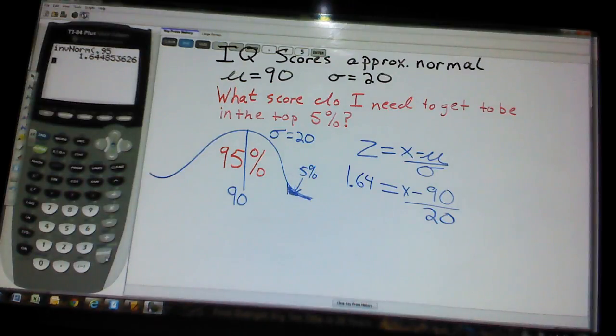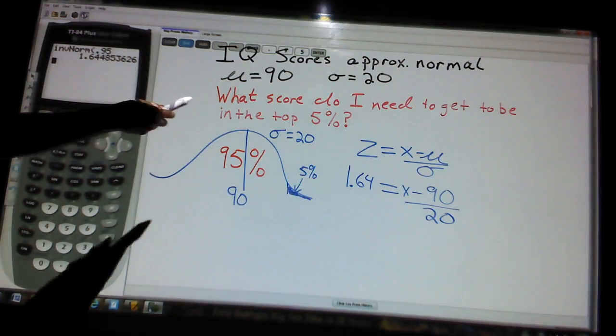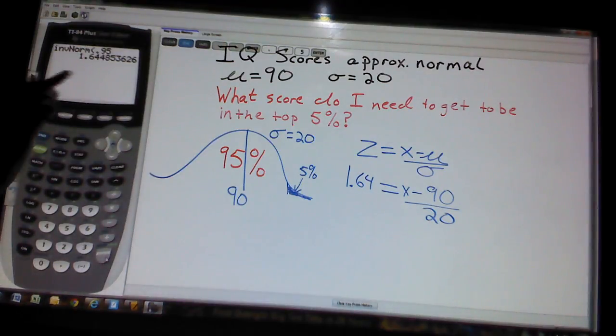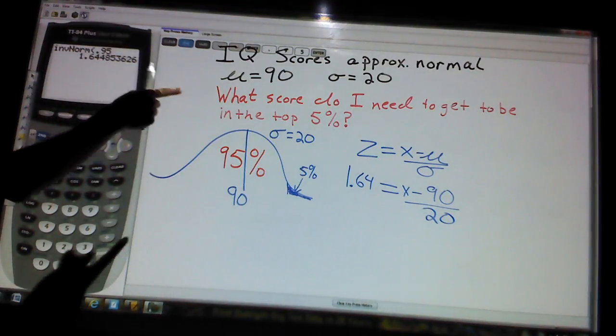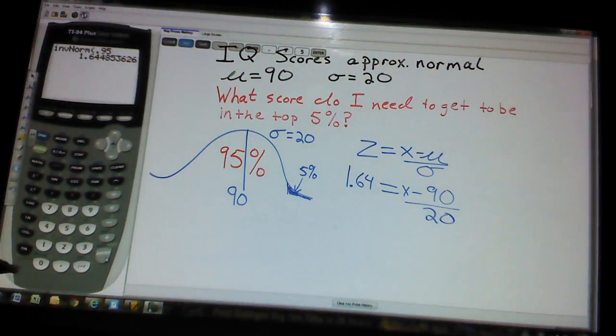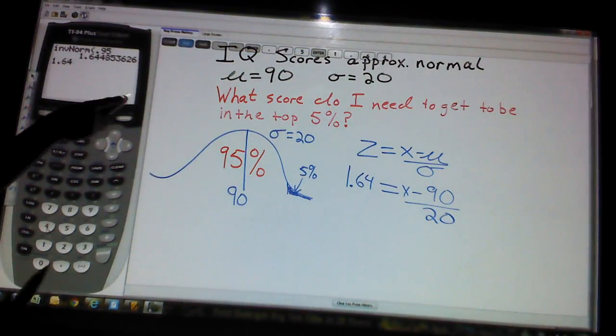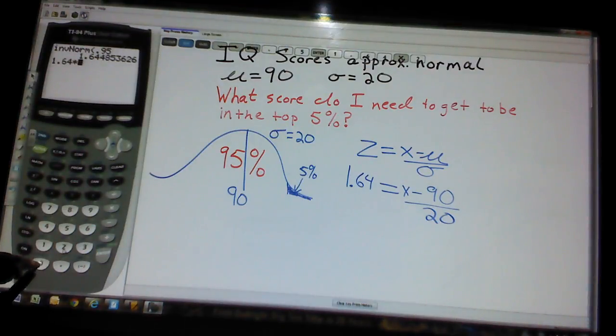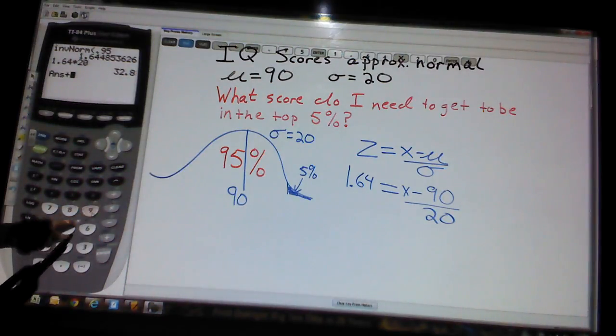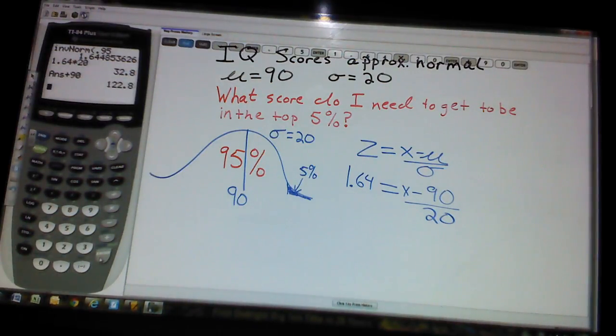Now we can solve using algebra, good old ninth grade, that's probably what Mr. Bob would say that would be kindergarten math, but I don't want to assume you know how to do that. Please take 1.64 to solve for x, and multiply that by 20, 32.8, then we add 90, 122.8.